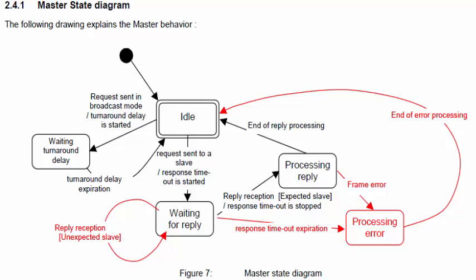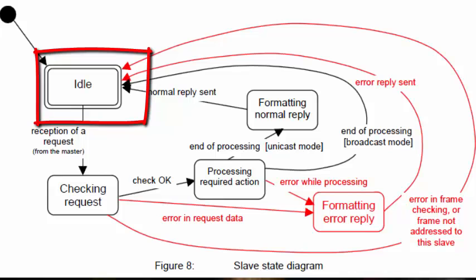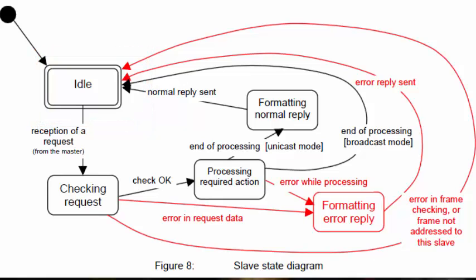The slave state diagram also contains an idle state. Unlike the master, the slave cannot leave this state unless it receives a request — it waits indefinitely until a request arrives from the master. The slave then checks the request: if the address field matches the slave's own address, the slave prepares and sends a response to the master, then returns to idle. If the request was a broadcast, the slave stores the broadcast value and returns to idle.